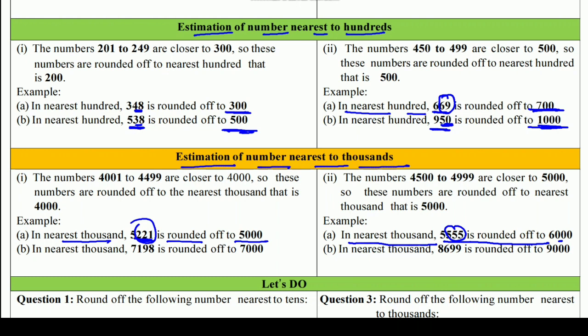Second example: 7,198 को 1000 में rounded off करना है। Last 3 digits 198 हैं, जो 500 से कम हैं, तो 7,000 पर रहेगा। And 8,699 — last 3 digits 699 हैं, 500 से ज़्यादा हैं, तो next वाले 1000 में जाएंगे — बन जाएगा 9,000.